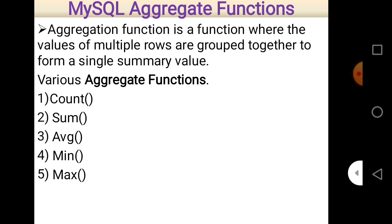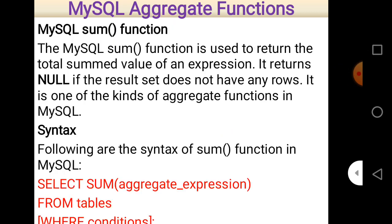The second aggregate function is SUM. As the name suggests, it actually adds different values. The MySQL SUM function is used to return the total sum of values of an expression. It returns NULL if the result set does not have any rows. It is one of the kinds of aggregate functions in MySQL.